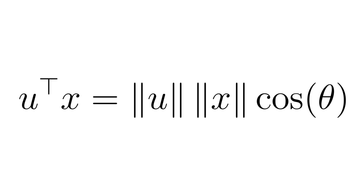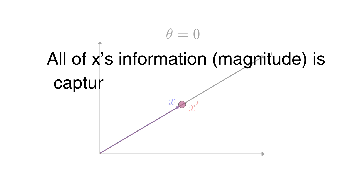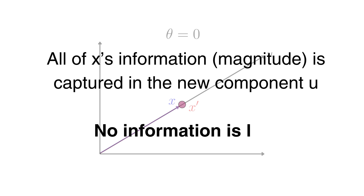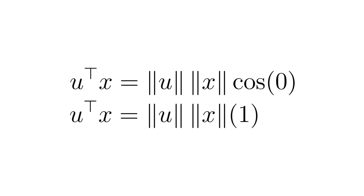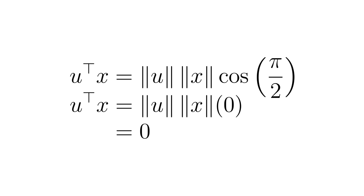This is because the dot product involves the cosine of the angle between them. So when the angle theta equals zero — i.e. the vectors are parallel — the original vector x is perfectly aligned with u, meaning all of x's magnitude or information is captured along u and none is lost. The dot product is maximized in this case because the cosine of zero is one. Conversely, if theta equals 90 degrees (pi over 2), x is orthogonal to u, then the cosine of pi over 2 equals zero and the projection is zero, meaning no information from x is preserved in that direction.